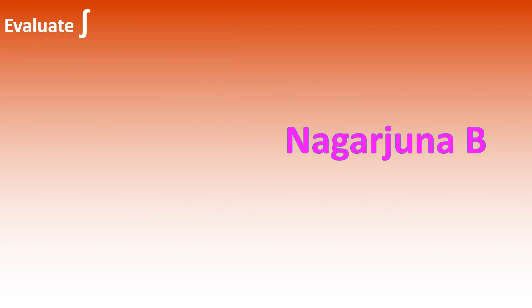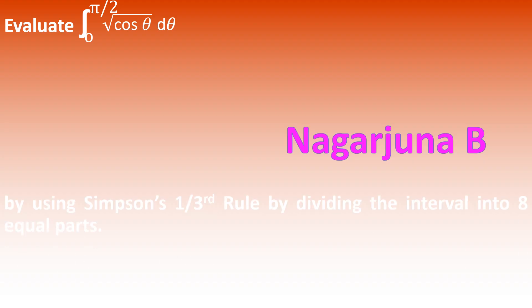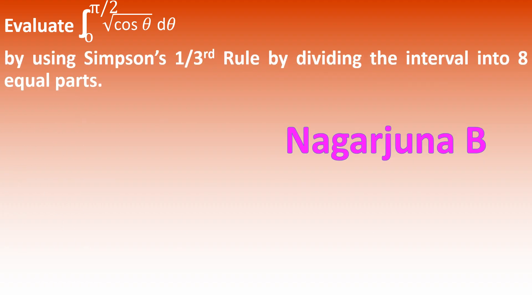Evaluate the integral within the limits 0 to π/2 of √(cos θ) dθ by using Simpson's one-third rule, dividing the interval into 8 equal parts. That means the value of n is equal to 8.